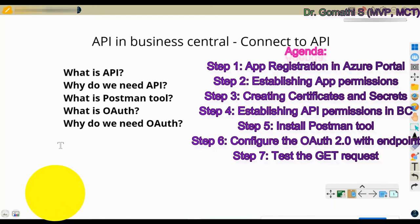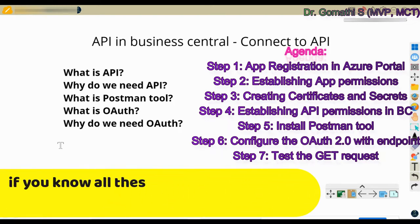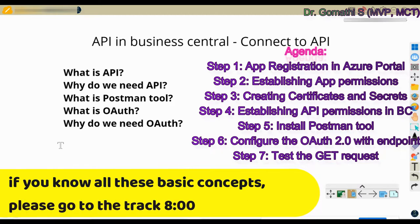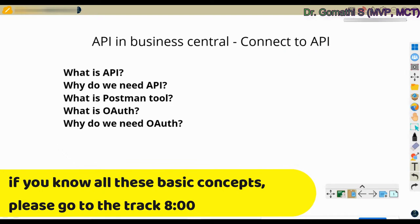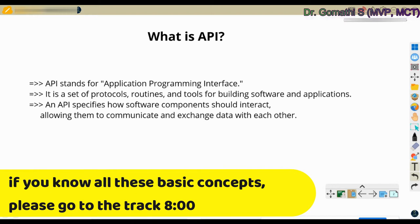In this video we will see APIs in Business Central — how to connect Business Central APIs and web services in Postman. Before going into the demo, I want to cover the key terminologies we'll be using throughout: what is an API, why do we need it, what is Postman, and what is OAuth and why do we need it.